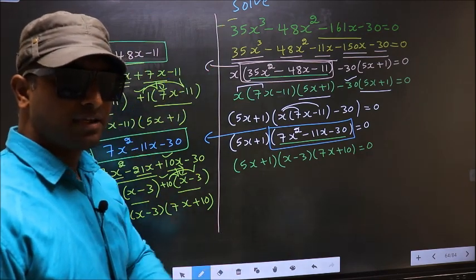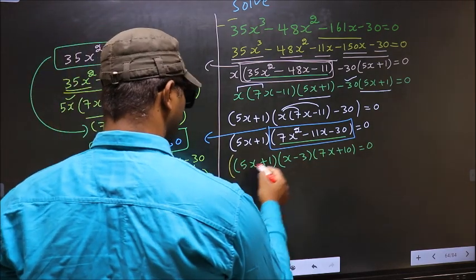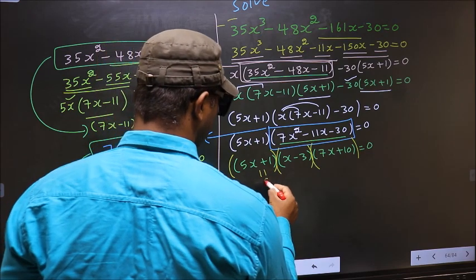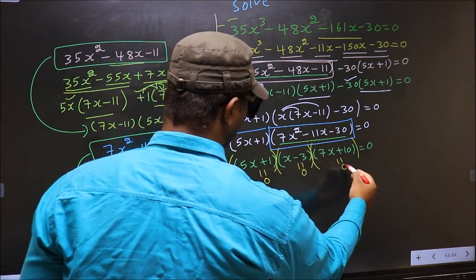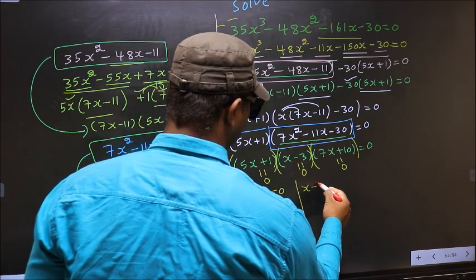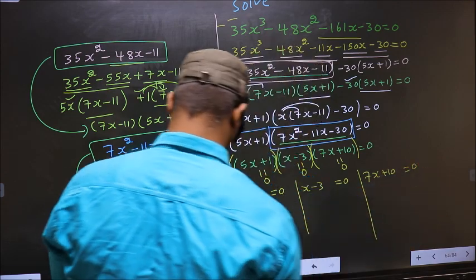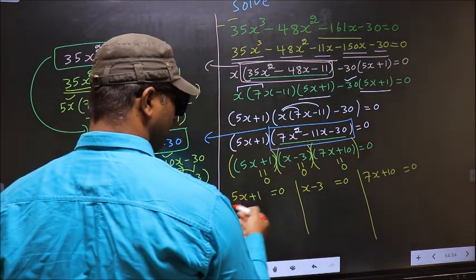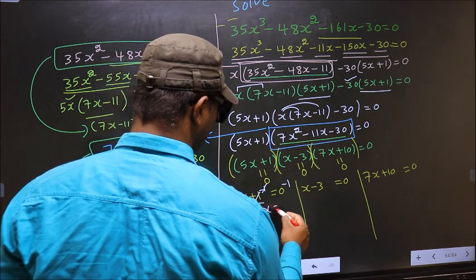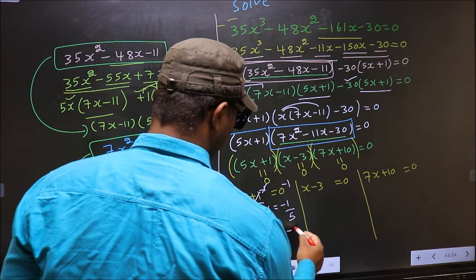We got a product of brackets equal to 0, so we equate each bracket to 0. From 5x plus 1 equal to 0: subtract 1 to get 5x equal to minus 1, then divide by 5 to get x equal to minus 1/5.